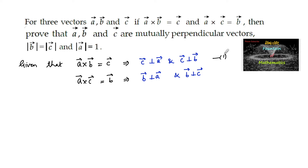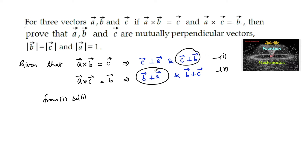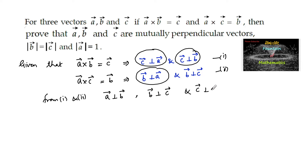So let's consider this as equation 1 and equation 2. From 1 and 2, we can say a is perpendicular to b, b is perpendicular to c, and c is perpendicular to a. So we can write: a vector is perpendicular to b vector, b vector is perpendicular to c vector, and c vector is perpendicular to a vector.